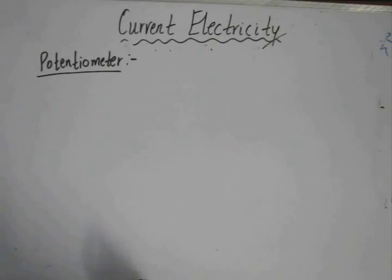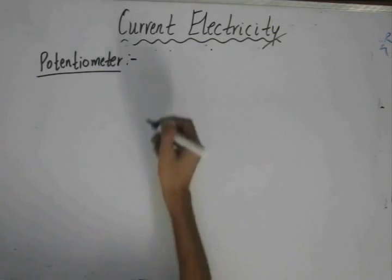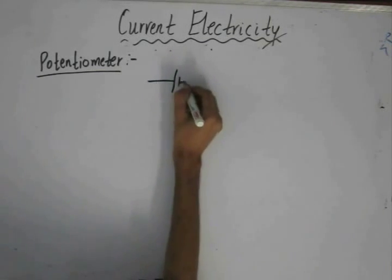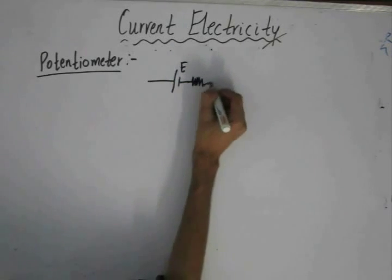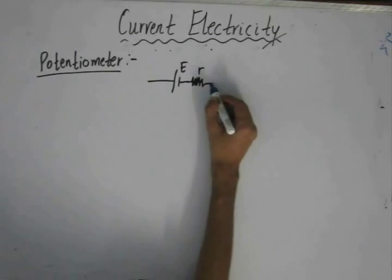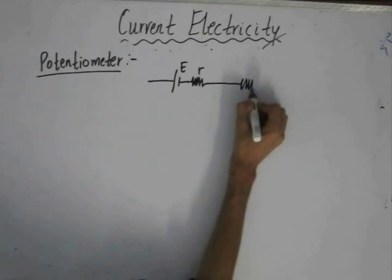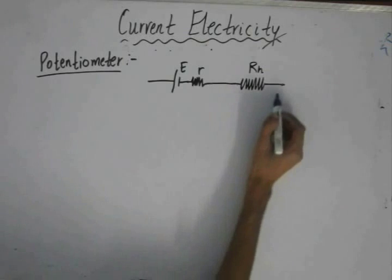A potentiometer is a device used to compare EMF of cells and to determine the value of internal resistance of the cells. To understand the principle of potentiometer: we have a cell of EMF E with some internal resistance. Across this, we have a rheostat — a variable resistor — of value RH.